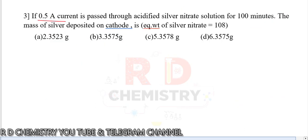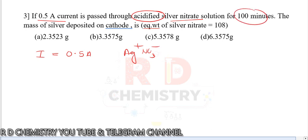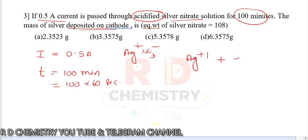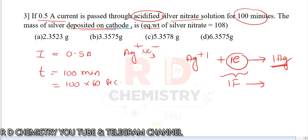Question 3. A current of 0.5 amperes passes through silver nitrate solution — AgNO3 dissociates to Ag+ and NO3 minus — for 100 minutes, which equals 6000 seconds. At the cathode, Ag+ undergoes reduction: Ag+ plus 1 electron gives Ag. One mole of electrons equals 1 faraday of electricity, which deposits 1 equivalent mass.